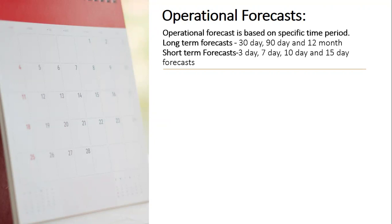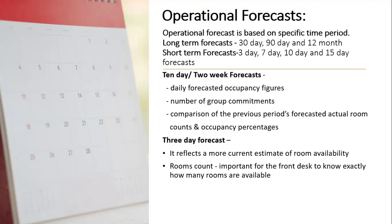Short-term forecasts that hotels use are 3-day, 7-day, 10-day, and 15-day forecasts. The 10-day room availability forecasting is developed collectively by the front office manager and the reservations manager, together with a forecast committee in the hotel.